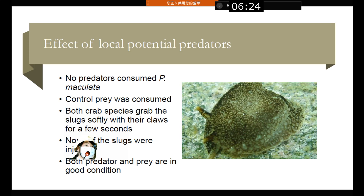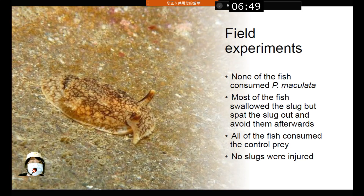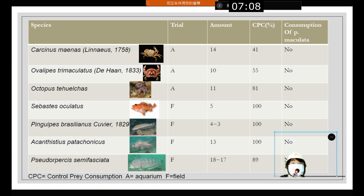Regarding the effect of local potential predators, no predators consumed the sea slug, though control prey was consumed. Both crab species grabbed the sea slug softly with their claws for a few seconds, but none of the sea slugs were injured and both predator and prey remained in good condition. In the field experiment, none of the fish consumed the sea slug; most fish swallowed the slug but spat it out and avoided it, while all fish consumed the control prey.